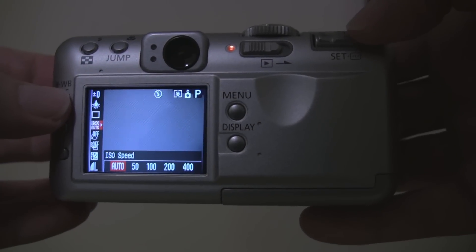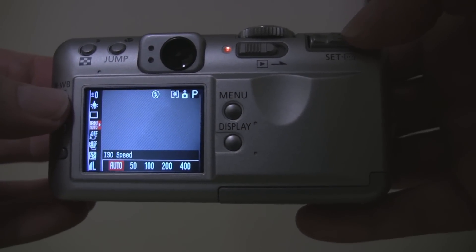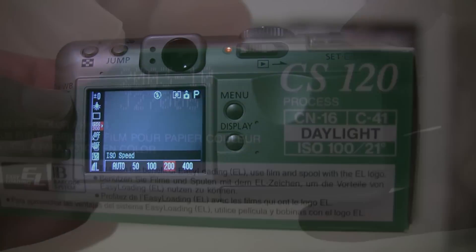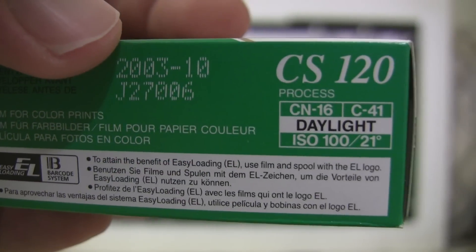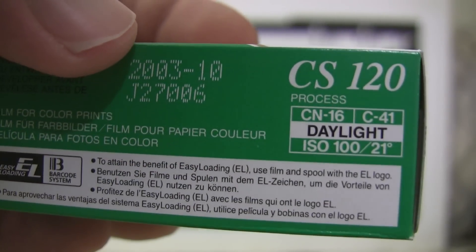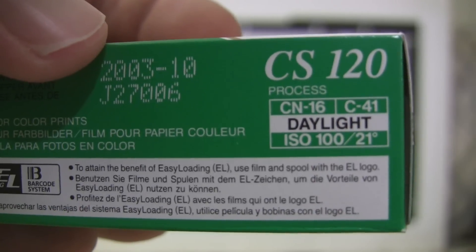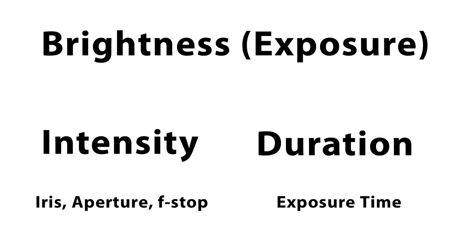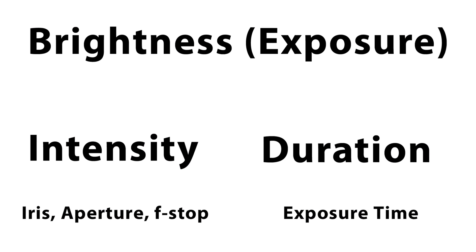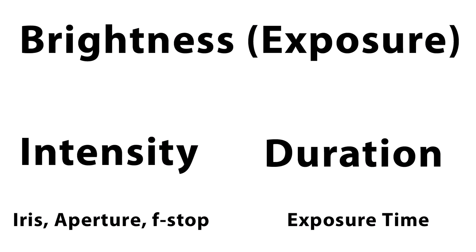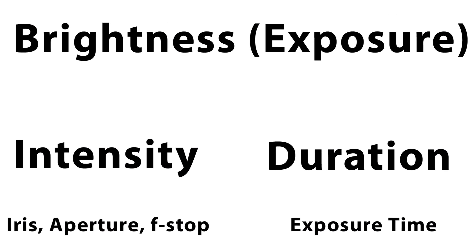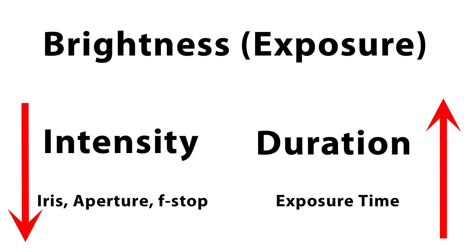Whether you're shooting digitally or on film, the medium — either the digital sensor or the film emulsion — records image brightness in response to how much light it receives. Both the intensity of the light and the duration of the exposure to the light matter. A bright scene exposed for a short period will be equivalent to a dimmer scene exposed for a longer time.